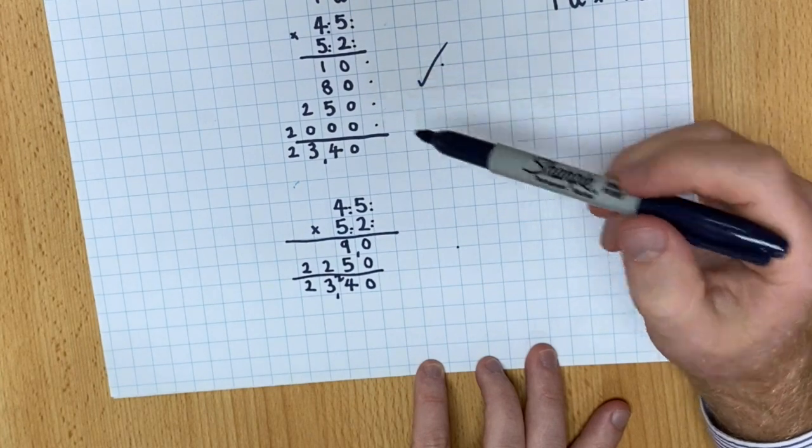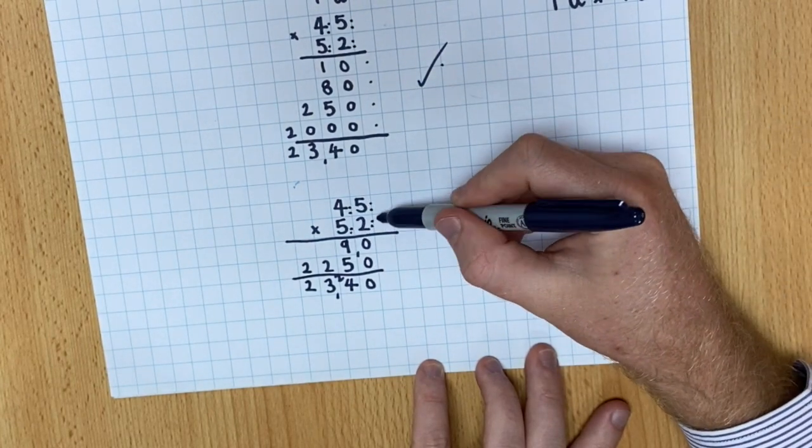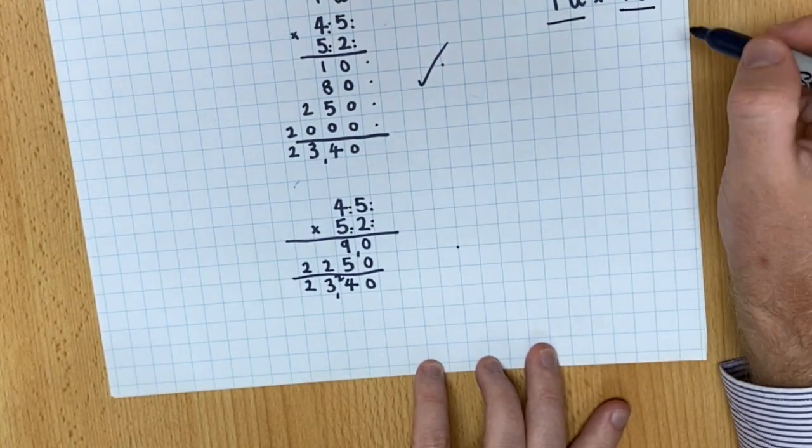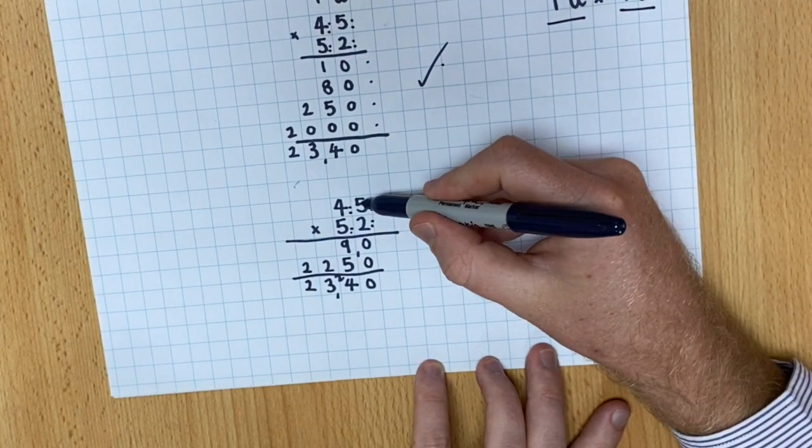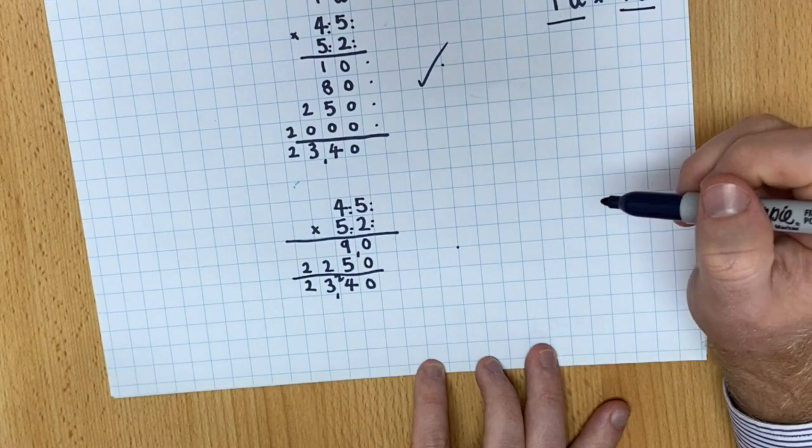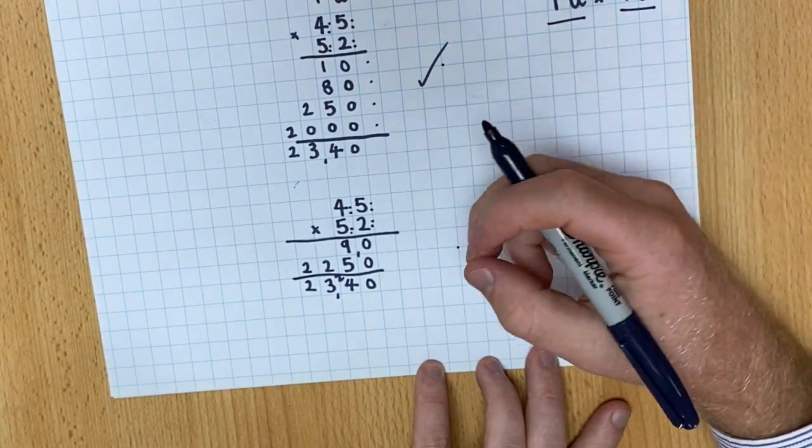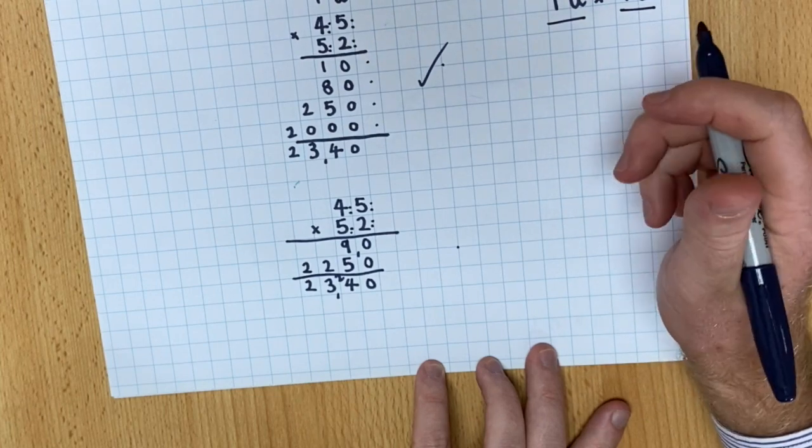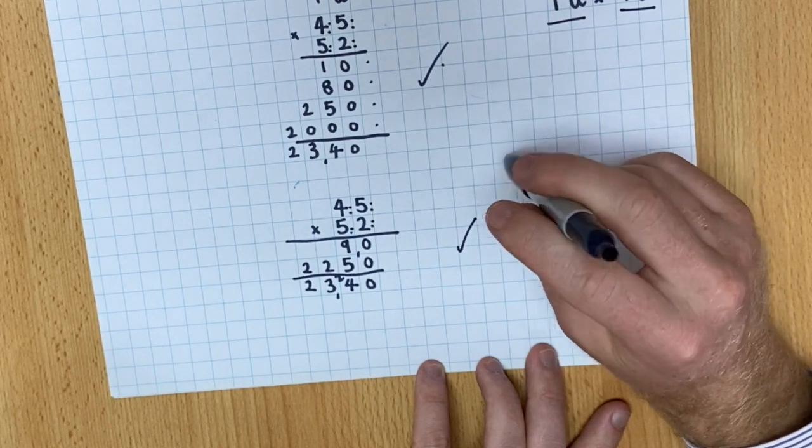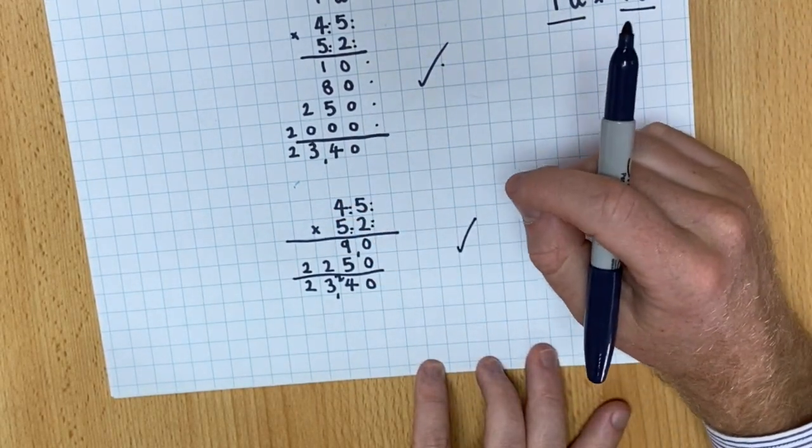One last thing before this video finishes. I'd like you to notice the dots that I put next to the number. Can you see that when you multiply a ten and a unit by a ten and a unit, that each number ends up with 2 dots next to it? And that means that each number has been multiplied twice. Or each digit has been multiplied twice. And that is a common mistake that people, when multiplying, get wrong. They don't multiply all the numbers.